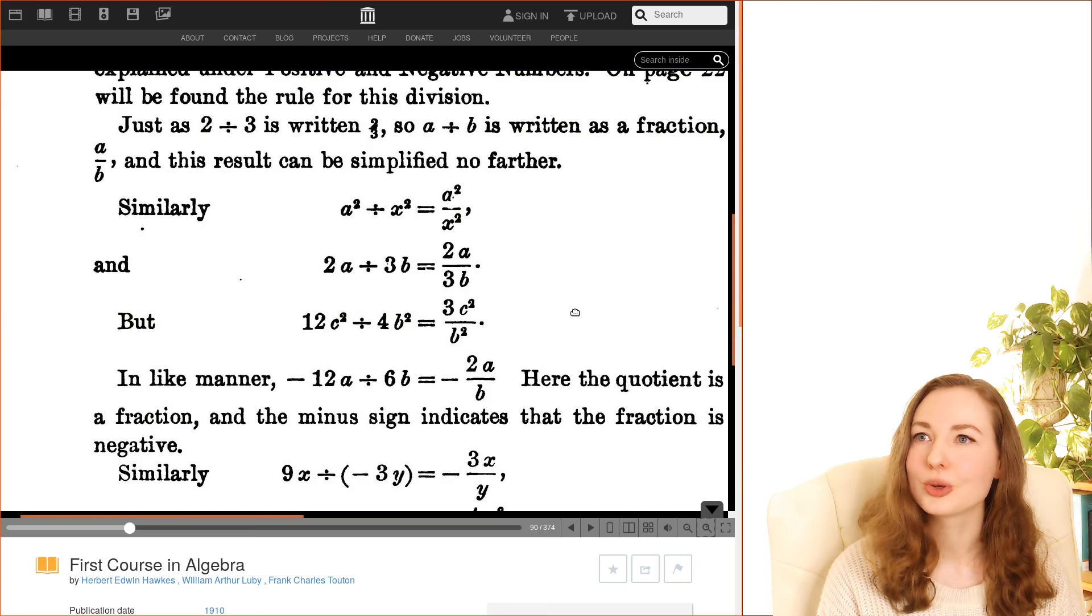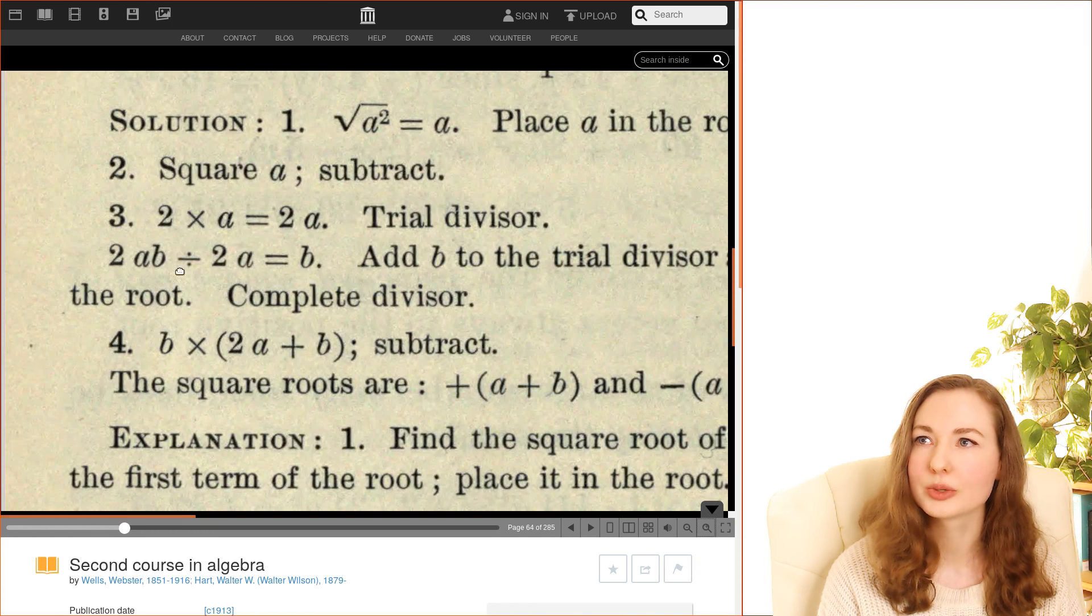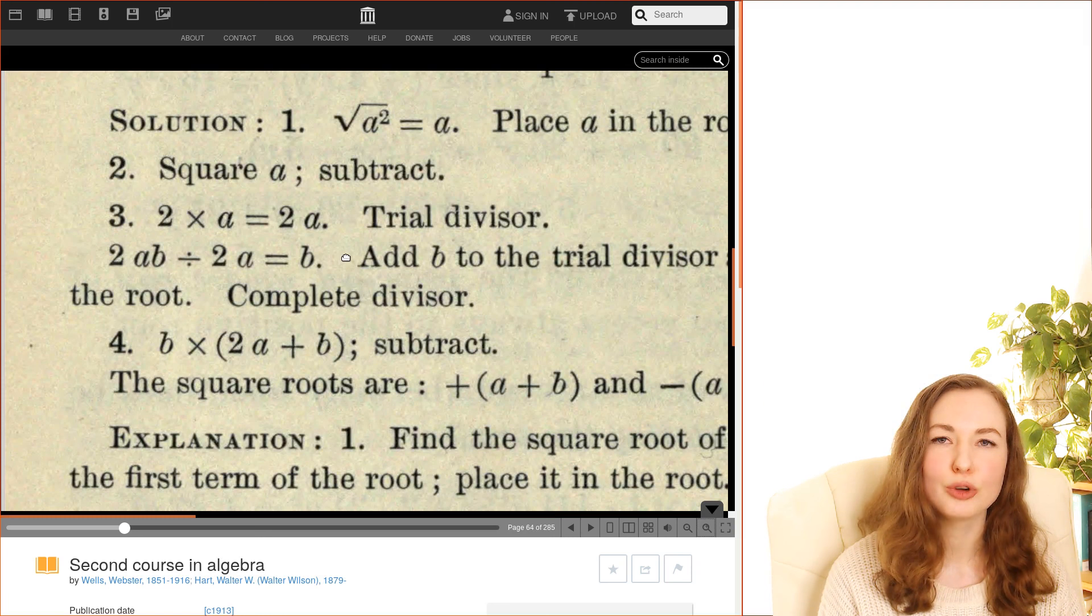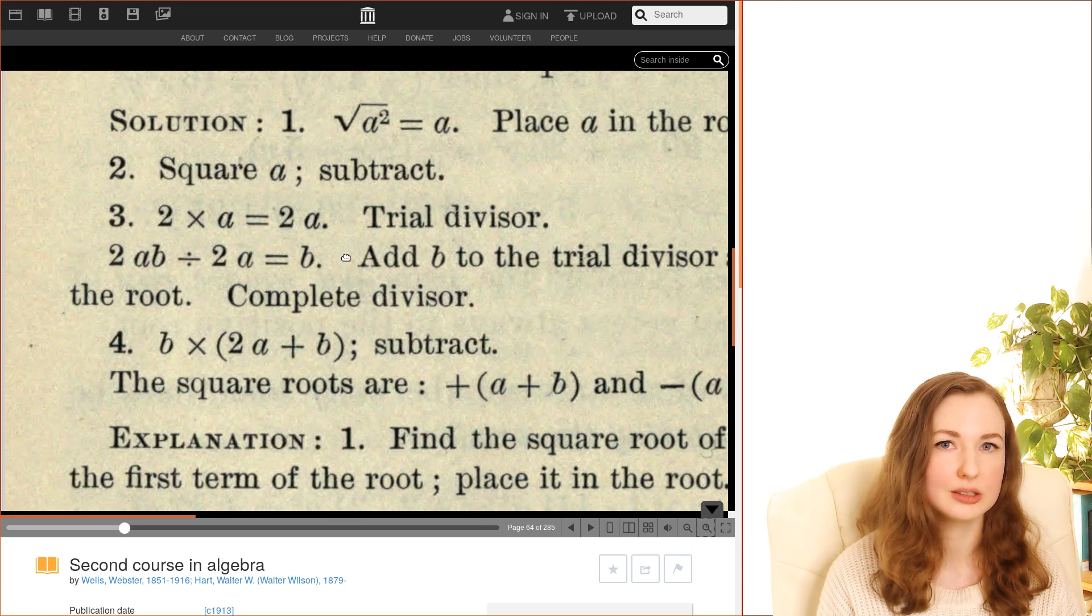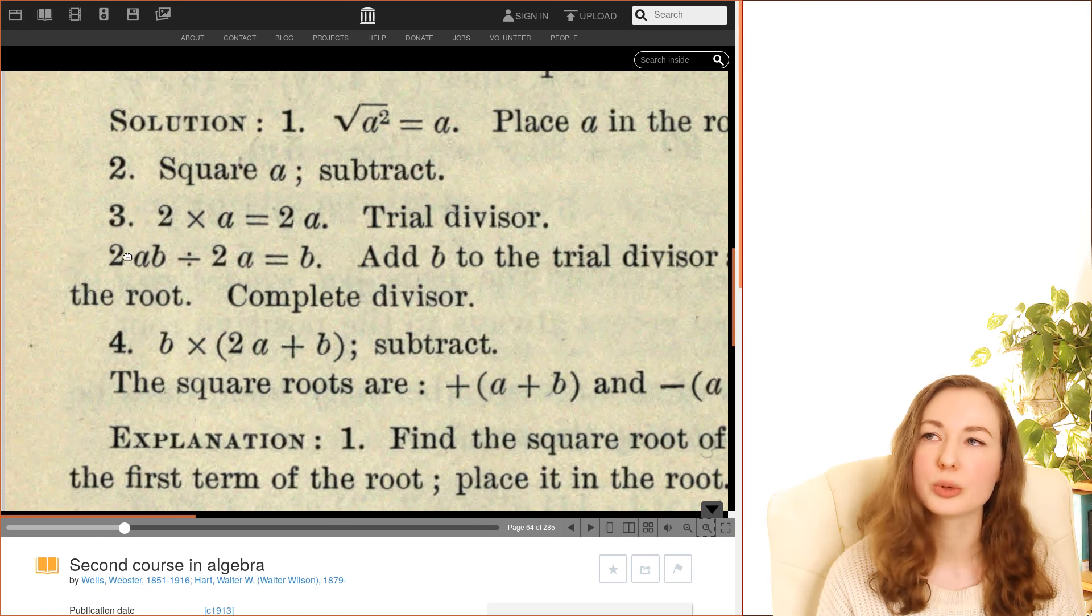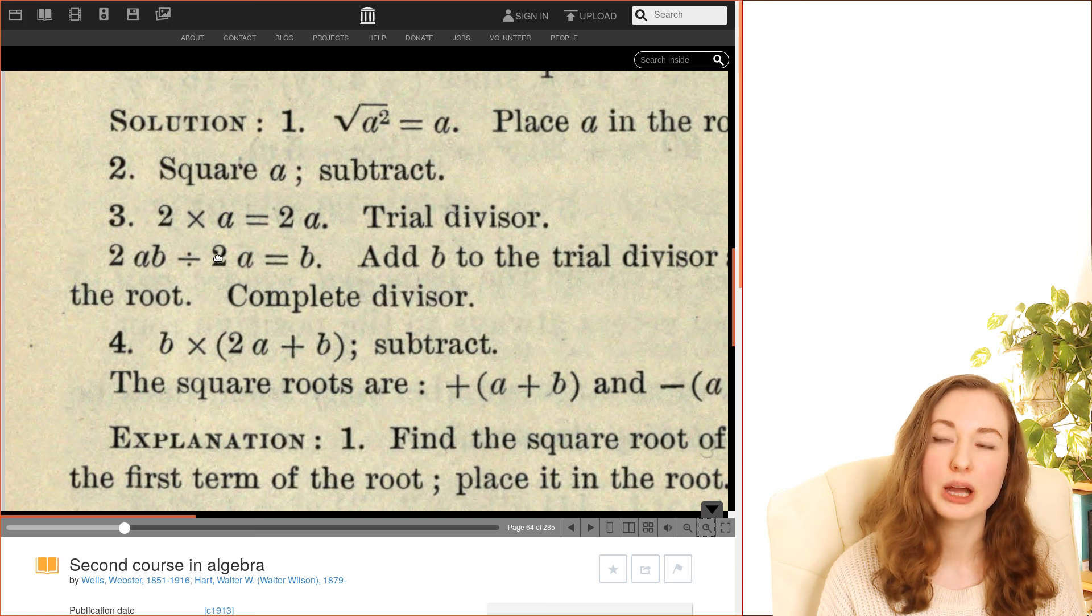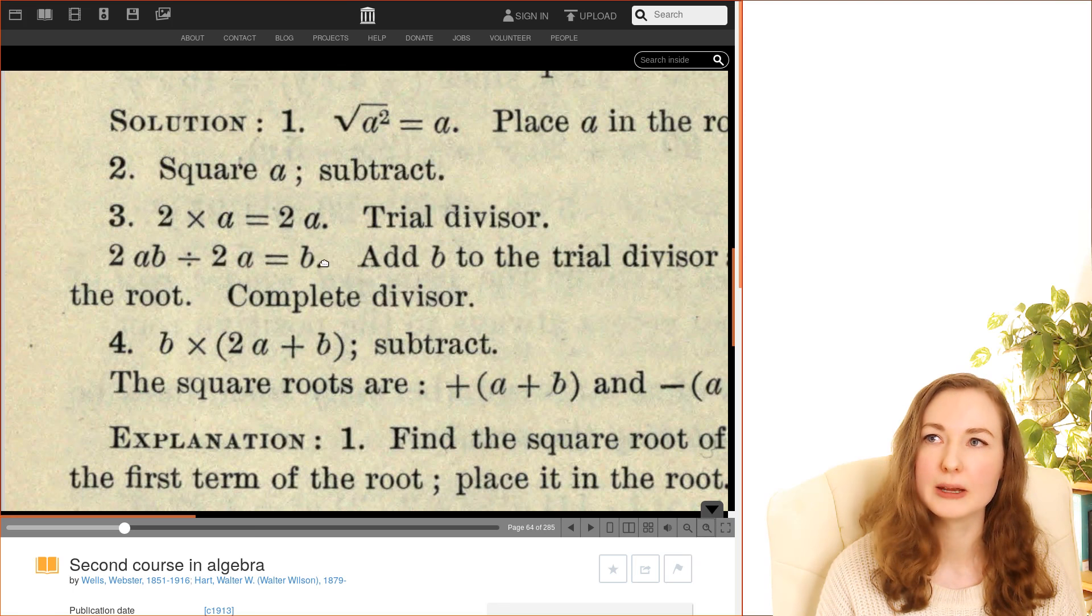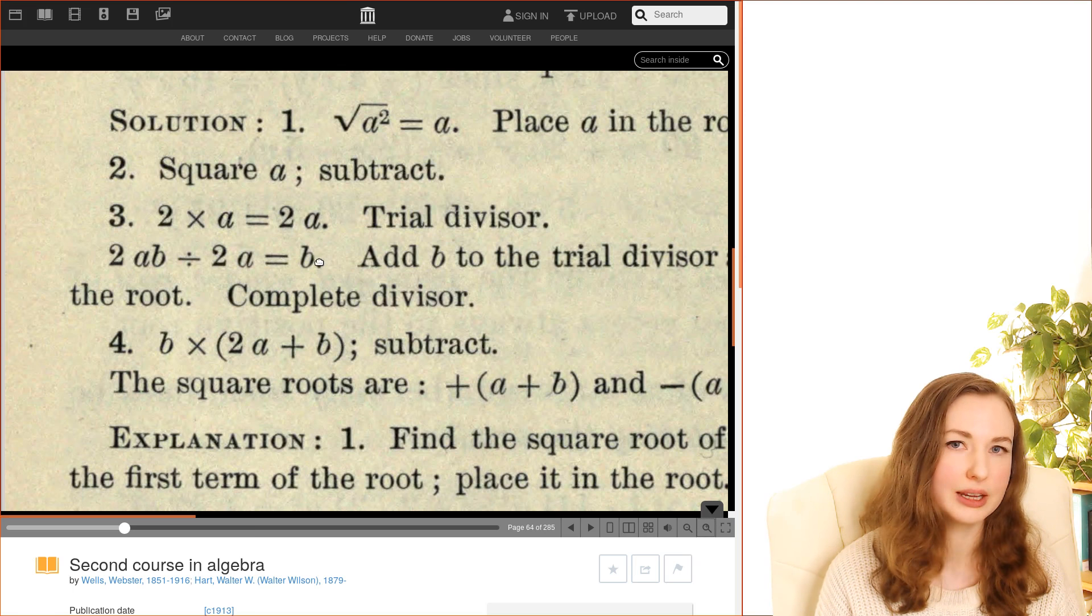In first course in algebra you see a similar kind of thing, and in second course in algebra we've got this 2ab divided by 2a making b. Now if you followed the rule that they had stated to the letter, you would interpret this as 2ab divided by 2, so you work out that that's ab, and then you multiply by a, so you'd get a squared b and not b as they've written here.